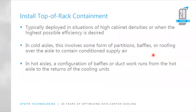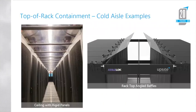Moving on to the top of the cabinets, we're talking about rack top containment. This is typically necessary when the highest levels of efficiency and capacity from the cooling infrastructure are desired, and it can be done in a number of ways — either with partial baffles or with a full roof in a hot aisle configuration. This would involve baffles or ductwork up to the drop ceiling, and then ducting the cooling units up to the drop ceiling to create a complete path for exhaust air to return to the cooling units.